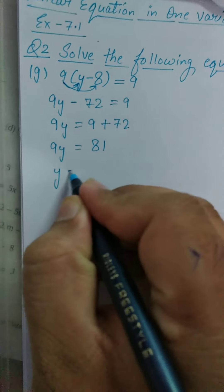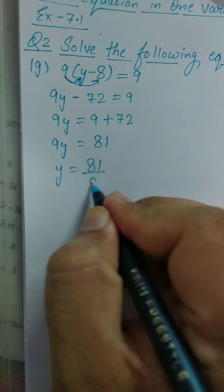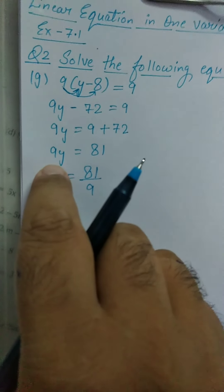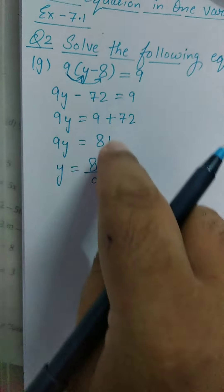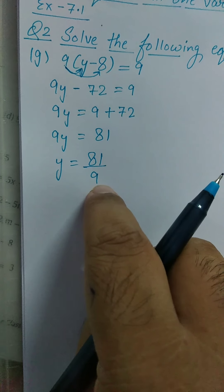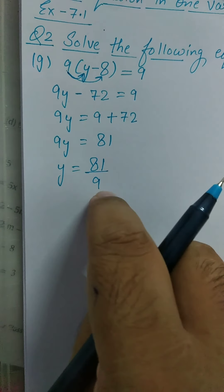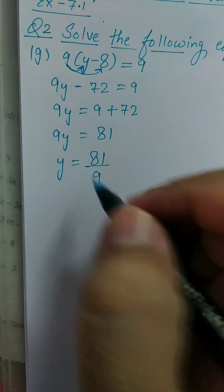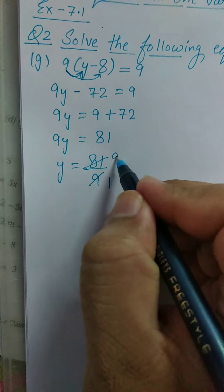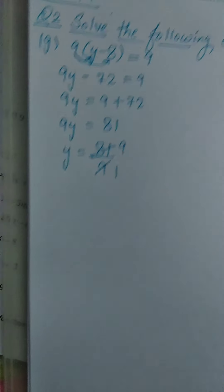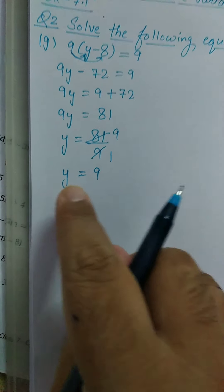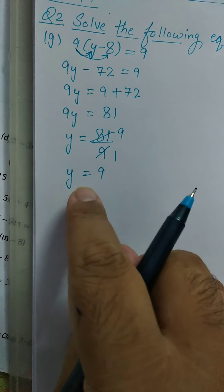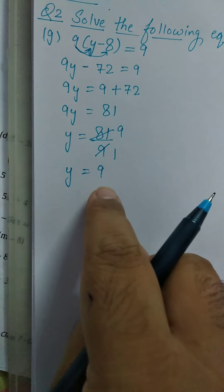Y is equal to 81 divided by 9. The 9 which was in multiplication on LHS, when shifted to RHS, changes to division. 81 divided by 9: 9 nines are 81. So, Y is equal to 9. Now you have to verify — find the value of Y. Y is equal to 9.